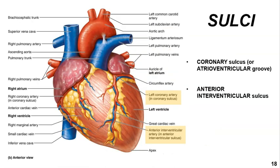There are small grooves on the surface of the heart where major blood vessels are located. The coronary sulcus, which is also called the atrioventricular groove, is a major landmark between the atria and the ventricles.